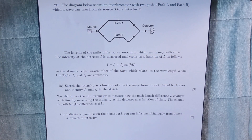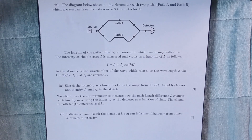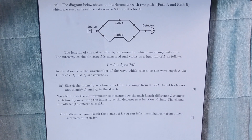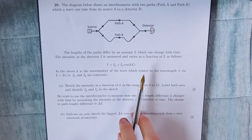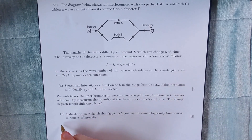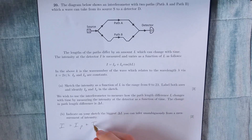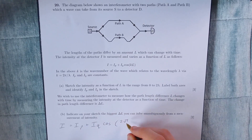The diagram below shows an interferometer with two paths, path A and path B, which a wave can take from its source S to a detector D. The lengths of the paths differ by an amount L, which can change with time. The intensity at the detector I is measured and varies as a function of L as follows: I equals IP plus IQ cos KL. K is the wave number, which relates to the wavelength lambda via K equals 2 pi over lambda. IP and IQ are constants. Sketch the intensity as a function of L in the range from 0 to 2 lambda, label both axes, and identify IP and IQ in the sketch. Substituting in K, we get I equals IP plus IQ cos(2 pi over lambda times L).